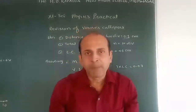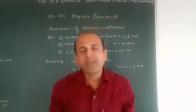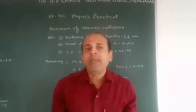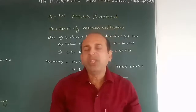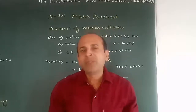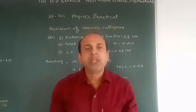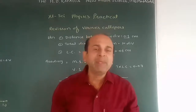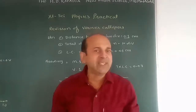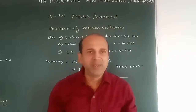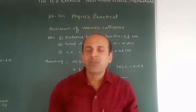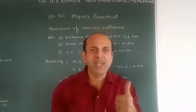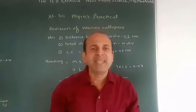Objects are different and dimension values may be different, but the observation method is the same. In this way, we can find the dimension of any object using Vernier calipers. And also, by measuring the dimension, we can find its volume too. So revise this experiment and recall your knowledge. Bye, have a nice day. Thank you.